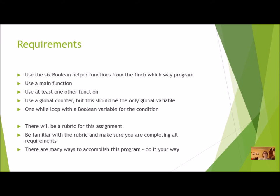Here are the requirements. You are expected to use your six boolean helper functions. You must use a main function where most of the work happens — main should call other functions where the action occurs. You must have at least one other function beyond the six helper functions and main. You will use a global counter — it should be the only global variable. And you must have a while loop with a boolean variable for the condition.